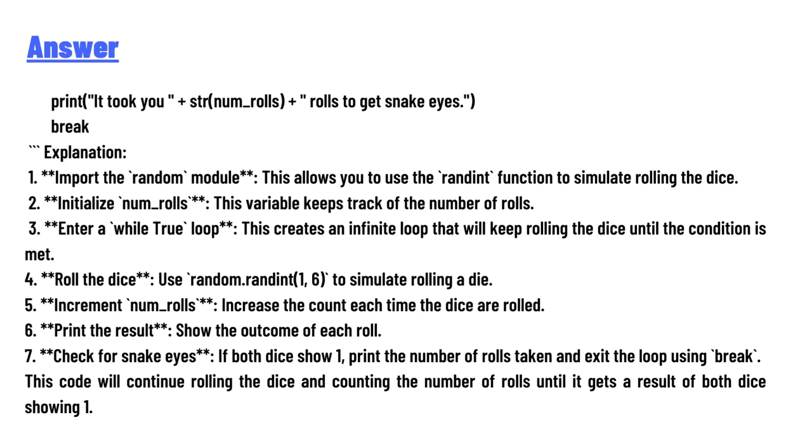6. Print the results - show the outcome of each roll. 7. Check for snake eyes - if both dice show 1, print the number of rolls taken and exit the loop using 'break'.